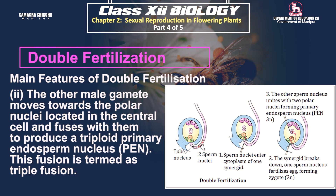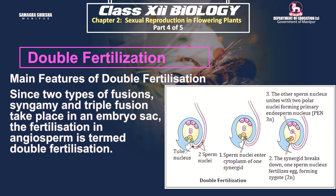In flowering plants, in the same embryo-sac, fertilization takes place two times: syngamy and triple fusion. Fertilization occurs twice in the embryo-sac of flowering plants. This is called double fertilization.